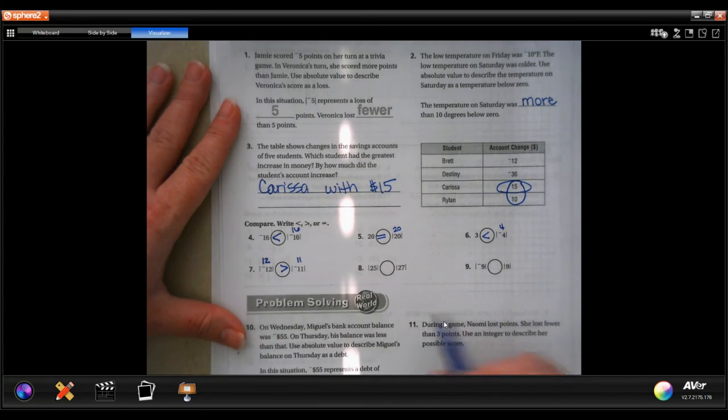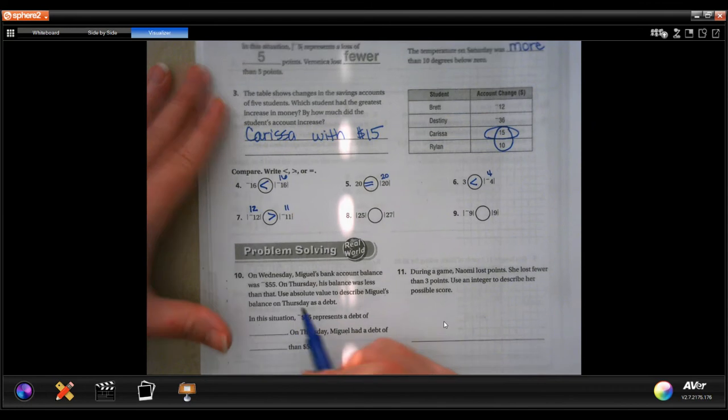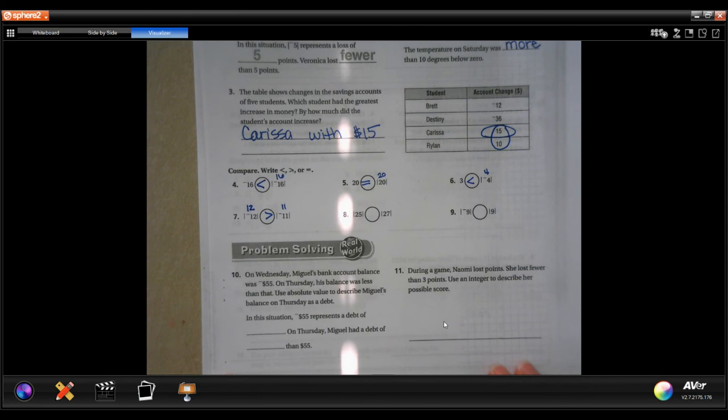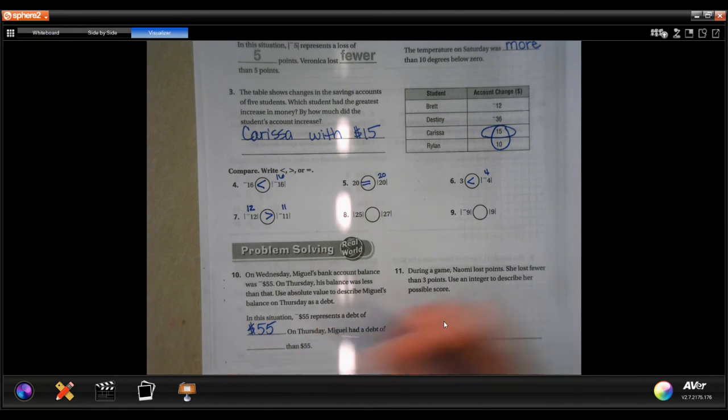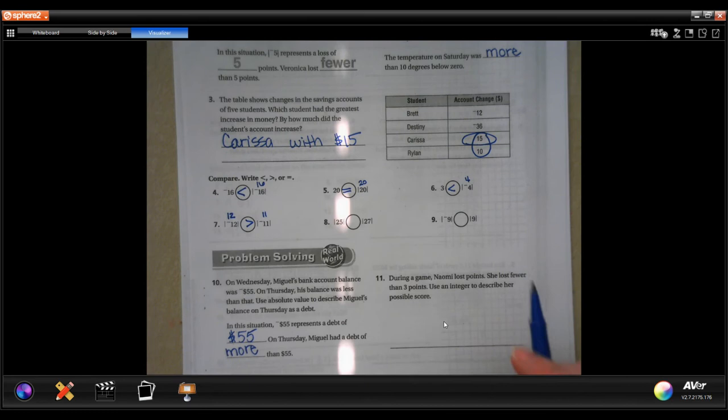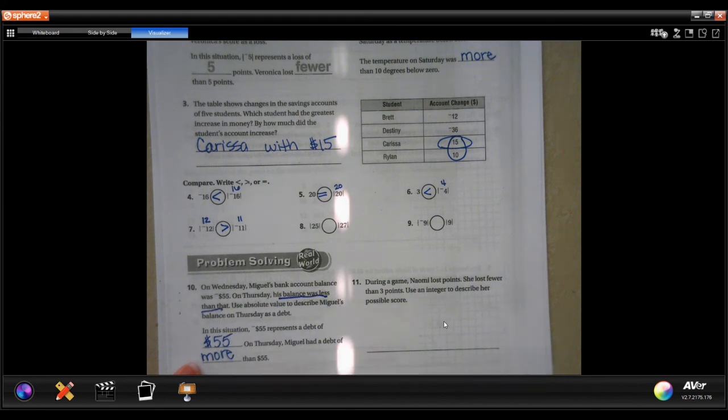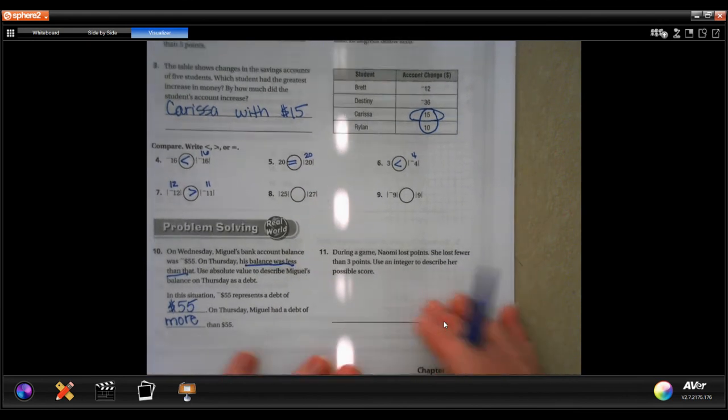On Wednesday, Miguel's bank account balance was negative 55 dollars. On Thursday, the balance was less than that. Use absolute value to describe Miguel's balance on Thursday as a debt. In this situation, negative 55 represents a debt of 55 dollars. The absolute value of negative 55 is still 55. So a debt, which means the negative of 55 dollars. On Thursday, Miguel had a debt of more than 55 dollars. His balance was less than that, which means that negative went further, so it means he was more in debt than 55 dollars.